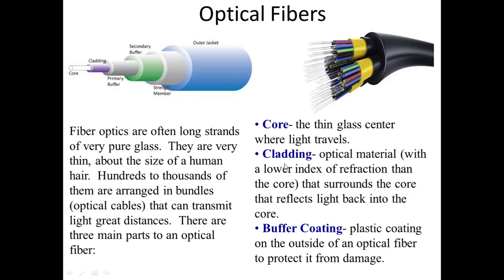If we want to understand the construction of this optical fiber, there are three main parts: one is the core, second is the cladding, and third is the buffer coating. The core is made up of glass with a very high refractive index, so we can say that the core is a denser medium. The light which travels for a very long distance passes through the core.